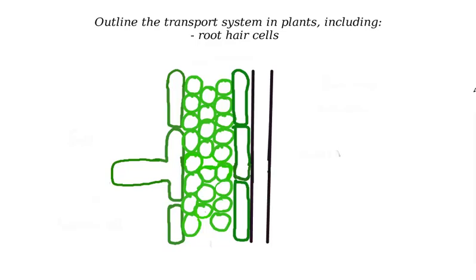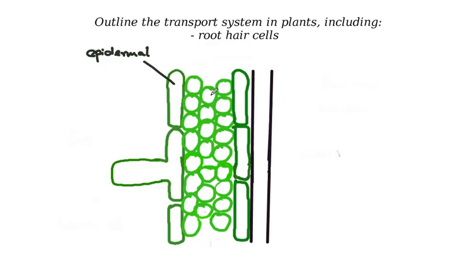First of all we're going to start with the root hair cells which we've already looked at previously. We're going to go through in a little bit more detail to tie it in with the rest of the plant. Our root hair cell is this extension on what we call an epidermal cell. Epidermal cells are the cells that line the outer part of the root and the leaves, so this specifically is our root hair cell.